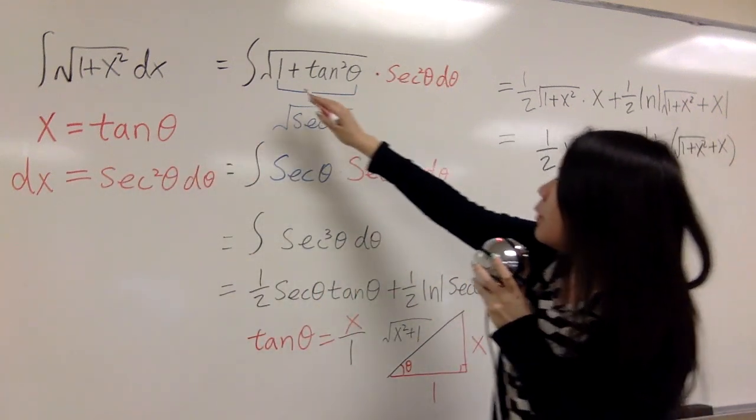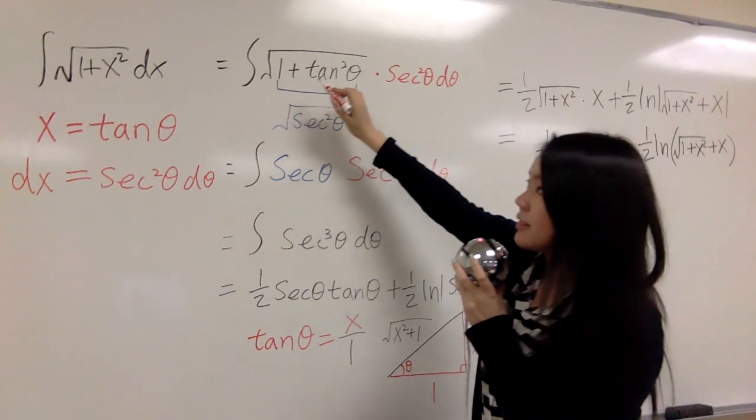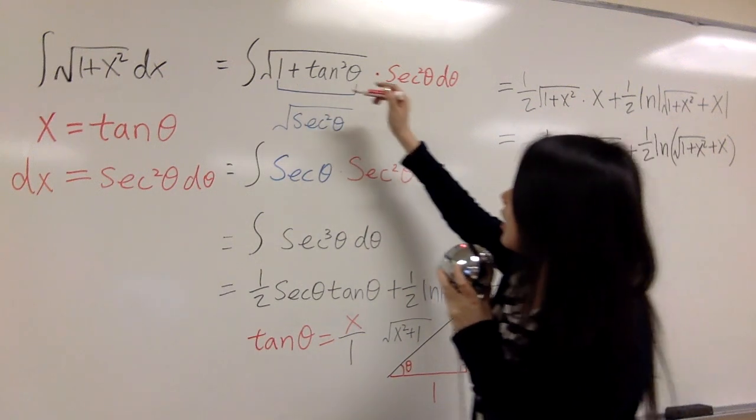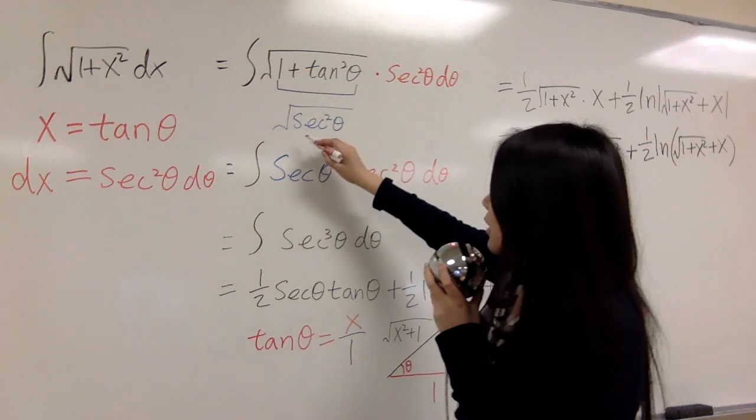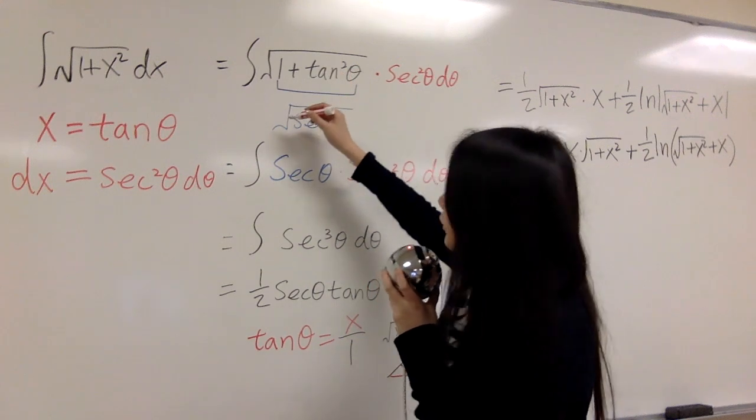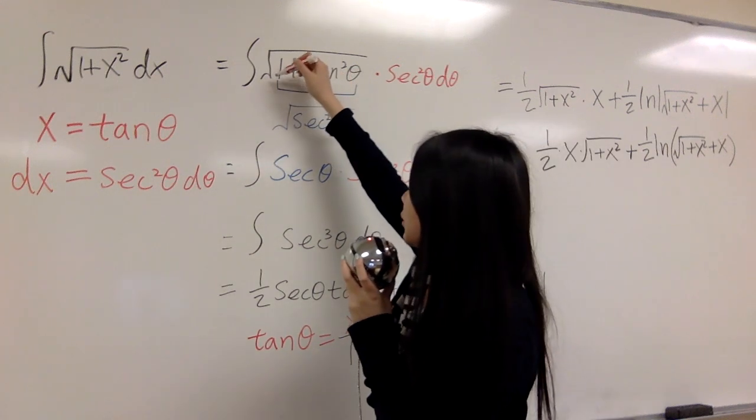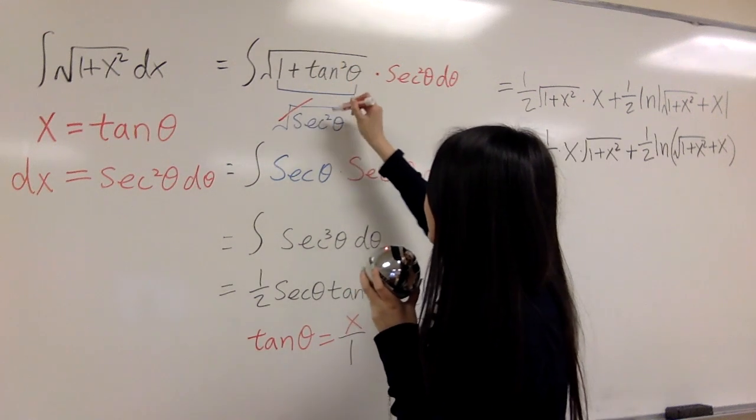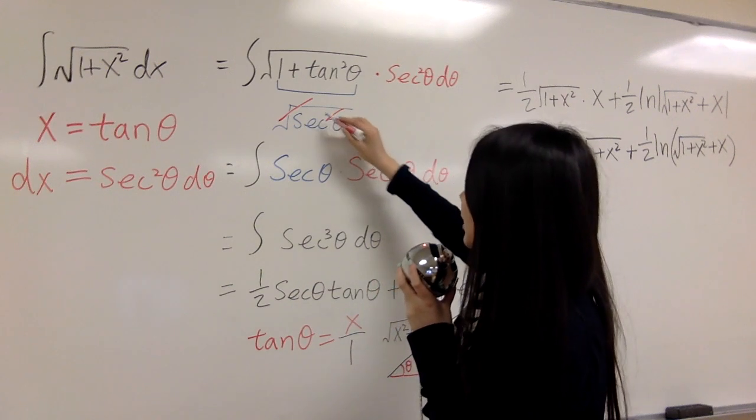So now it's 1 plus tangent squared theta, and that is the same as secant squared theta. And don't forget the square root. You can cancel out because you have square and square root.